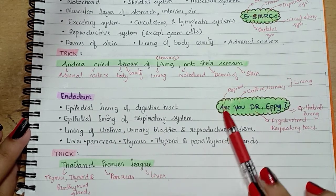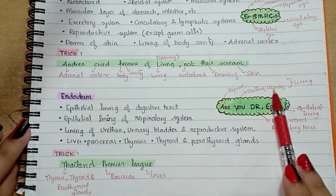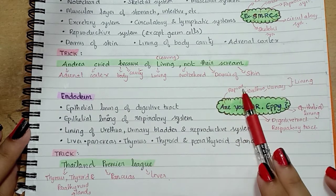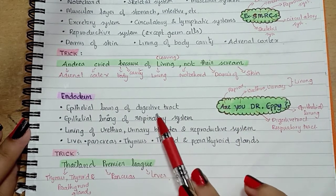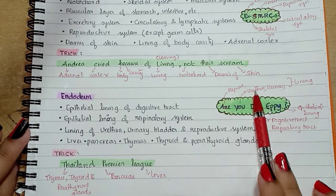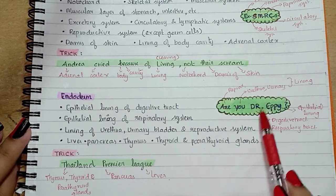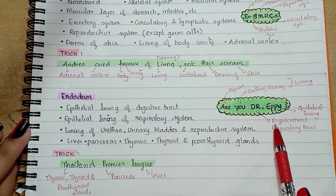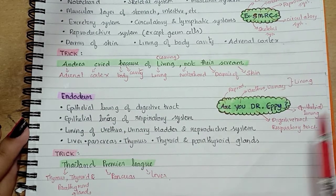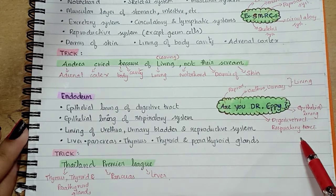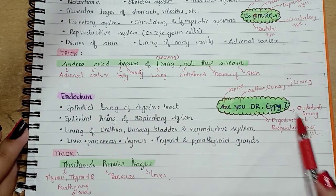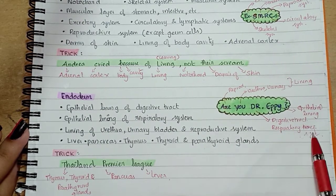For the endoderm linings, the trick is 'Are you Dr. Epi?' 'Are you' stands for reproductive system and urethra/urinary bladder — these three are just linings. You can remember this because in respiratory system there is no 'U', but in reproductive there is a 'U', so 'are you?' means reproductive, urethra, and urinary bladder. Then 'Dr. Epi': D for digestive tract and R for respiratory system — these two are epithelial linings. So epithelial lining of digestive tract and respiratory system.